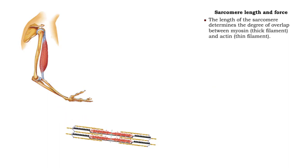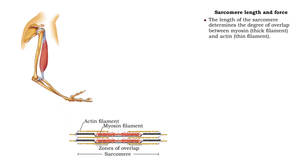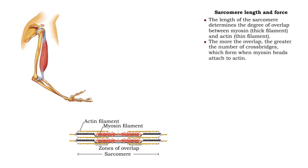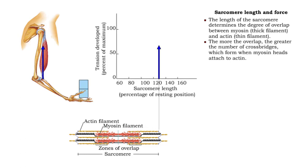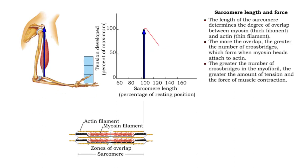Sarcomere length determines the degree of overlap between myosin and actin filaments. The more the overlap, the greater the number of crossbridges — the connections between myosin heads and actin. Because tension is generated when myosin heads pull on actin, the amount of tension produced in a muscle fiber depends upon the number of crossbridges formed in a myofibril. As sarcomere length decreases, optimizing the overlap, tension increases. Optimal sarcomere length and overlap produces maximum tension during contraction.